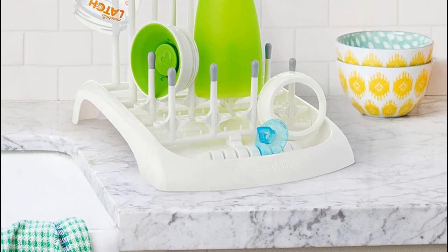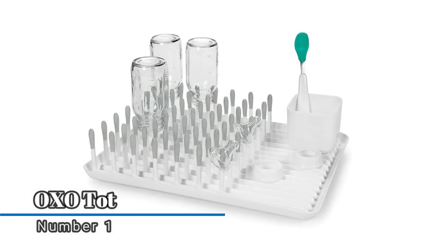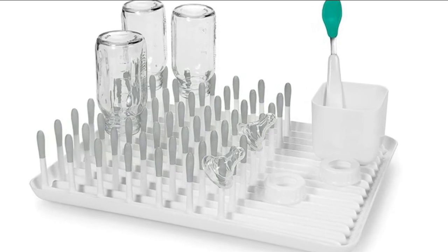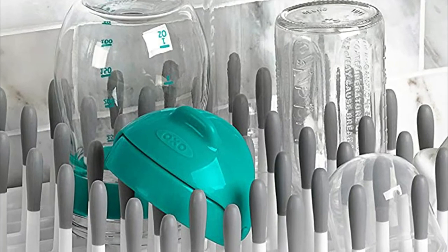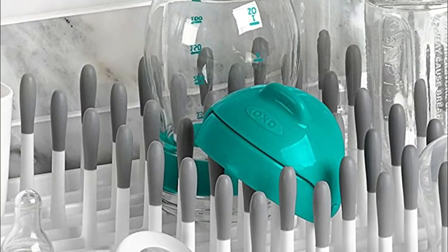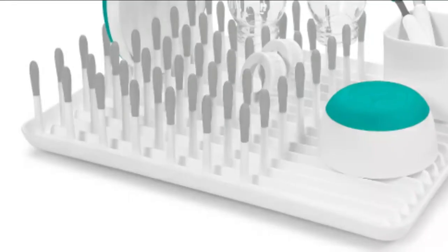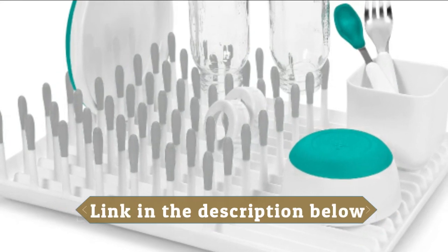Number one, OXO Tot. Includes a removable cup for straws, utensils, medicine droppers, and more. Features additional drying space for random pieces. Holds up to eight bottles, keeping them upright for proper drying. Flexible silicone tip tines won't scrape or chip bottles. Draining channels and rounded corners make it easy to pour out excess water.